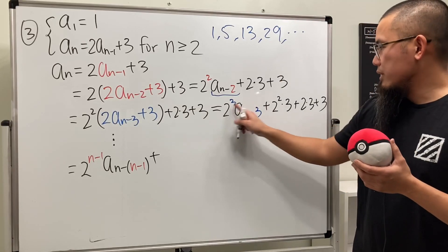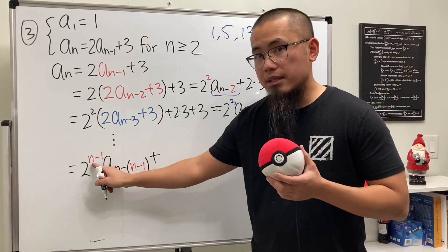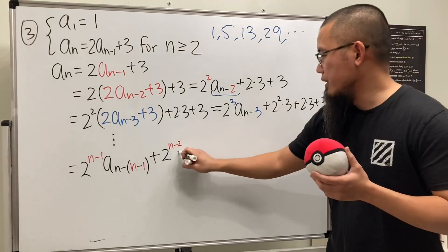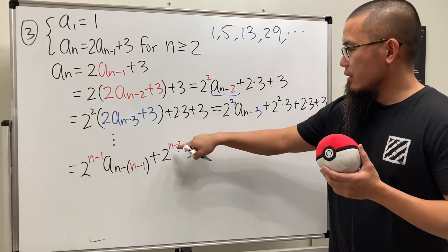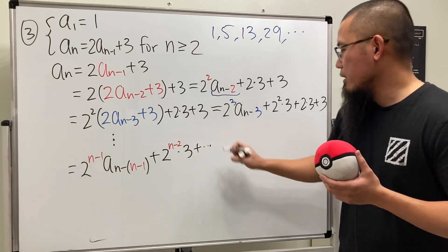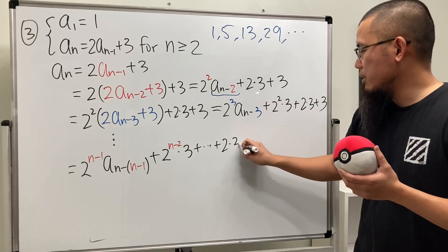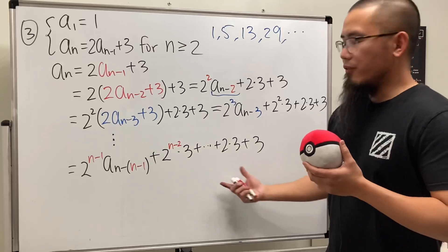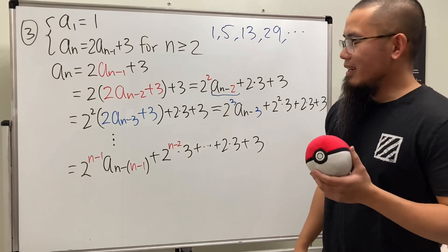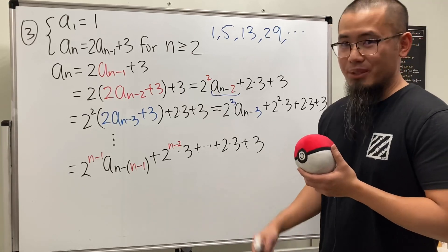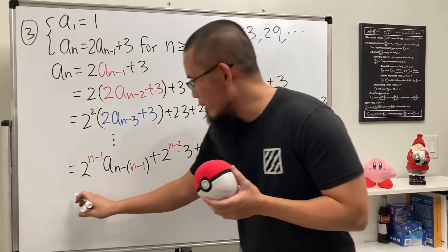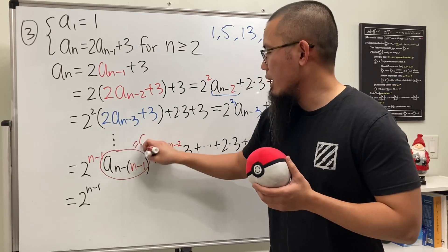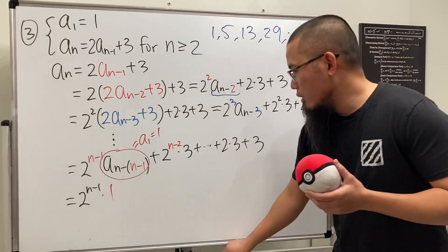The powers on the three terms go from 2^(n-2) down, like 2^(n-2)·3, then lower powers of 2 times 3, all the way down to 2·3 + 3. This forms a geometric series, so we need to use the geometric series sum formula. The 2^(n-1) part times a₁ equals 2^(n-1) times one, and for all the threes we apply the geometric series formula.